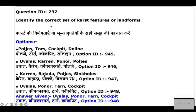We will identify the correct set of karst landforms. We will eliminate the incorrect options first. Let's see the fourth option — here we have Tarn. Tarn is a glacial lake, so it does not belong to karst topography. We can remove this option.